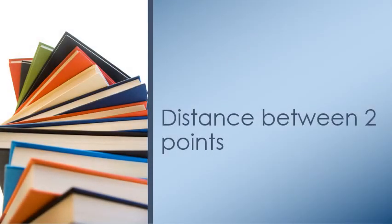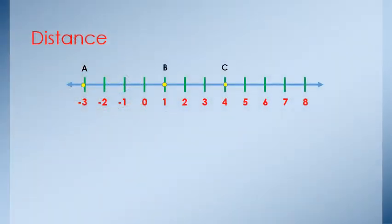Hello everybody. Today I will discuss the distance between two points. On the number line, we put the points A, B, C: A at negative 3, B at 1, C at 4.